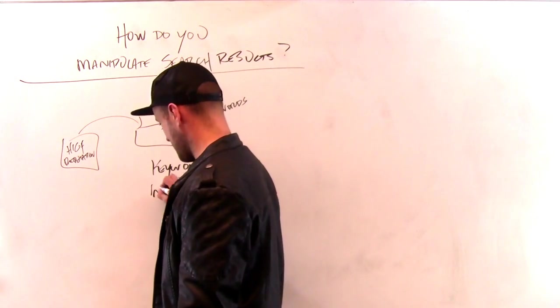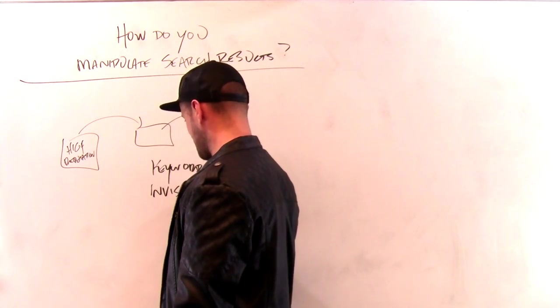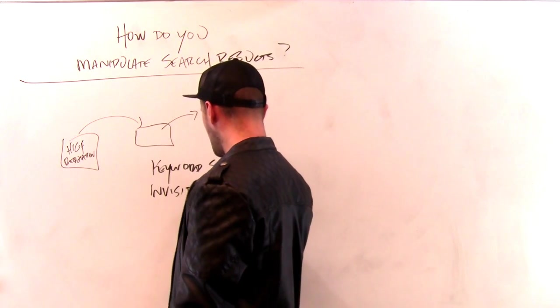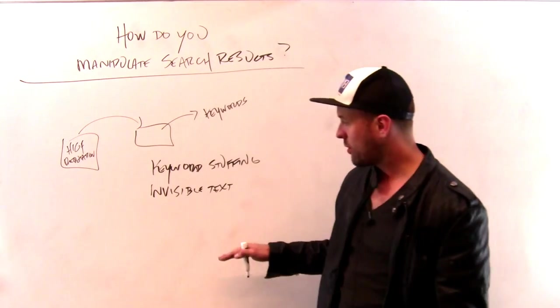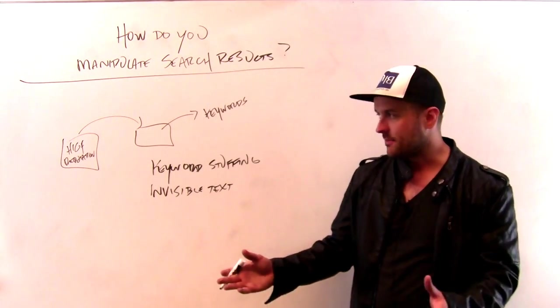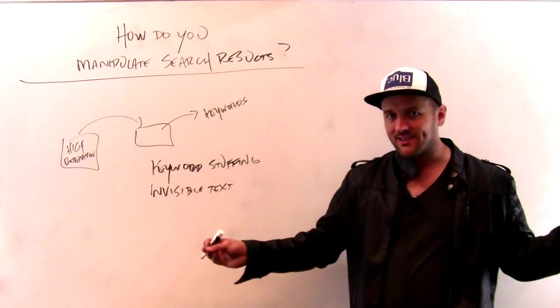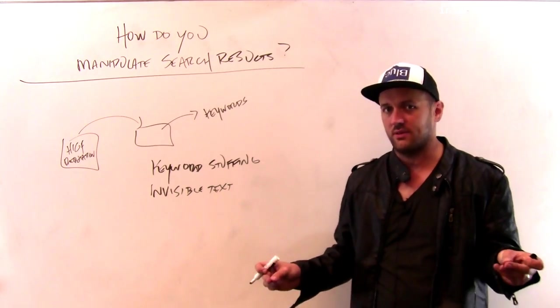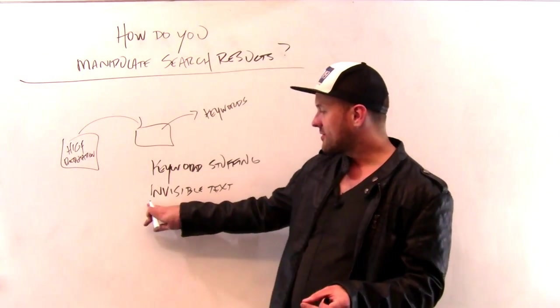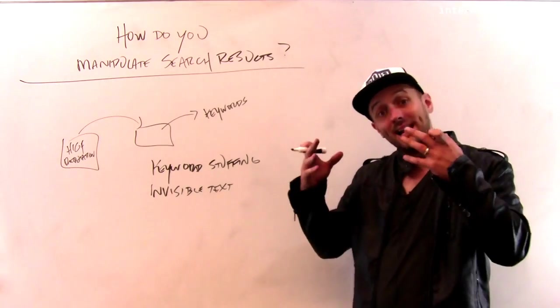Here's another thing that's interesting. How about invisible text? So if I want my site to look really important or to look like it's about something, I could stick a lot of text in there that's invisible to the user. So despite the fact that the user can't see this text, the robot may not notice that.